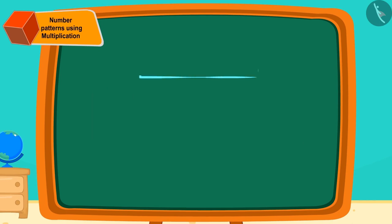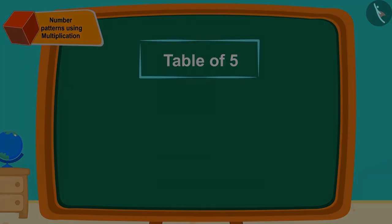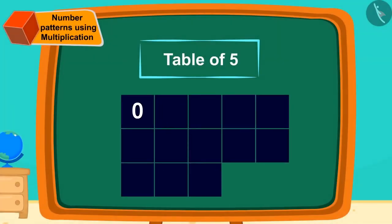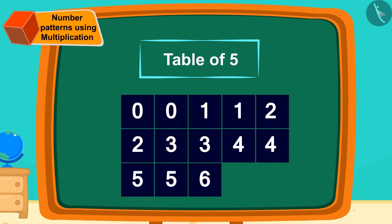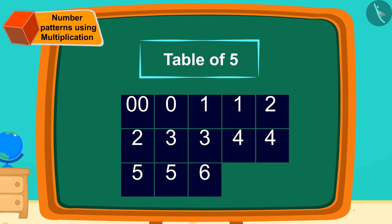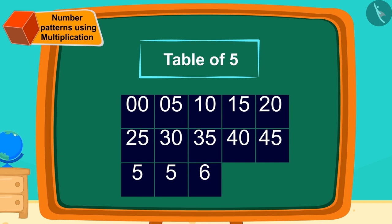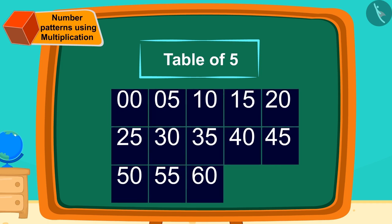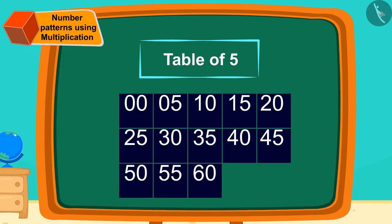Let us first look at the pattern of easy memorization of fives table. First, we will write the digits from zero to six twice this way. Now, we will write zero, five, zero, five, these patterns behind these digits. Did you recognize the pattern? Yes! It is the multiplication table of five. Isn't it easy?